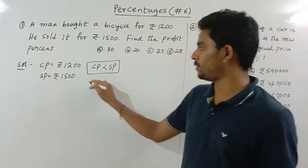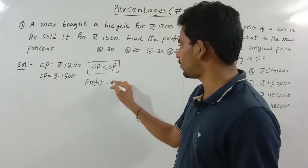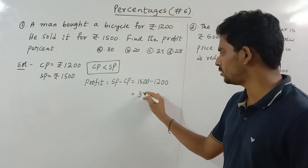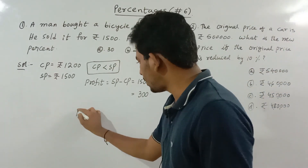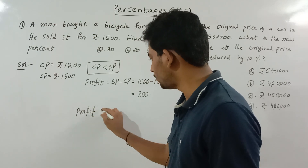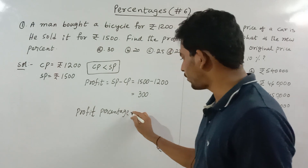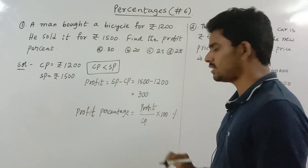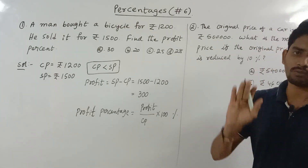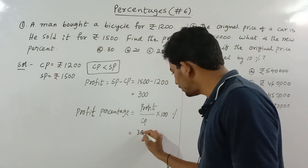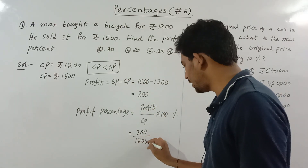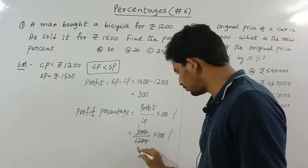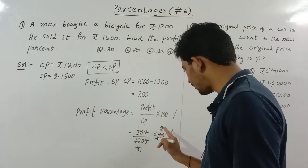Since CP is less than SP, there is a profit. Profit equals SP minus CP: 1500 minus 1200 equals 300 rupees. Profit percentage equals profit divided by CP, multiplied by 100. So that is 300 divided by 1200, into 100. Cancelling zeros: 300 divided by 12 equals 25. So the profit percentage is 25%.